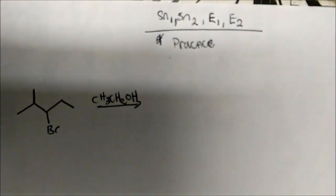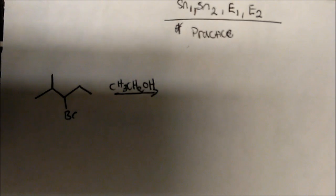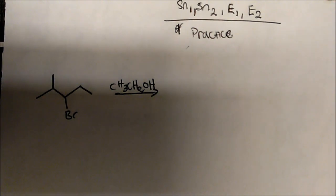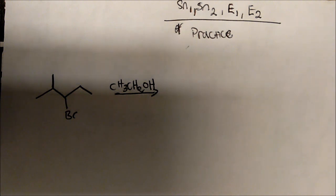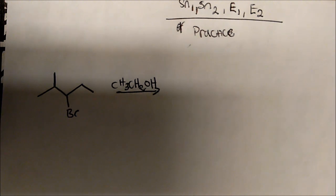We decided to add ethanol to it. Let's go through SN1, SN2, E1, or E2. The first thing I like to do is look at my alkyl halide — is it secondary, primary, or tertiary? Well, I have a secondary alkyl halide here with one hydrogen. Secondary gets a little bit tricky; we can't really tell.